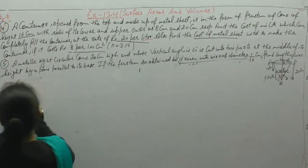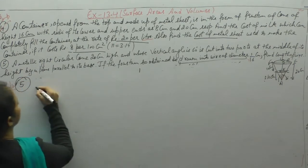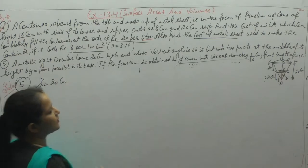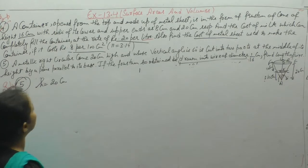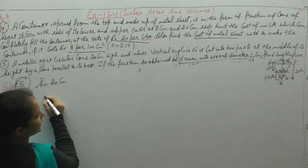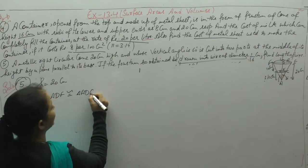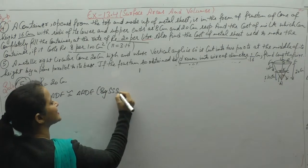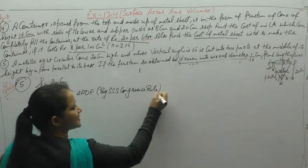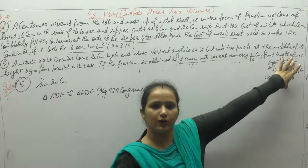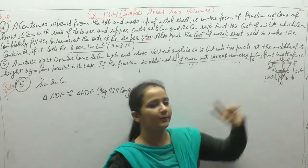A metallic right circular cone of height 20 cm whose vertical angle is 60° is cut into two parts at the middle of its slant height by a plane parallel to its base. Triangle ADF is congruent to triangle ADE by SSS congruence rule — all sides are equal: AF = AE, DE = FD, and height AD is common.